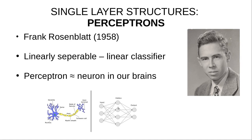First we will talk about single-layer structures. We call it single layer because we will talk about multi-layer later — for example, this model shown here is a multi-layer. Single-layer perceptrons are only used for linearly separable distributions. If the distribution is non-linear, the single-layer perceptron will not work. But this is very important because even when we move on to multi-layer perceptrons, we will still use the single-layer perceptron concept, so we should deeply learn what a perceptron is and what it actually does.